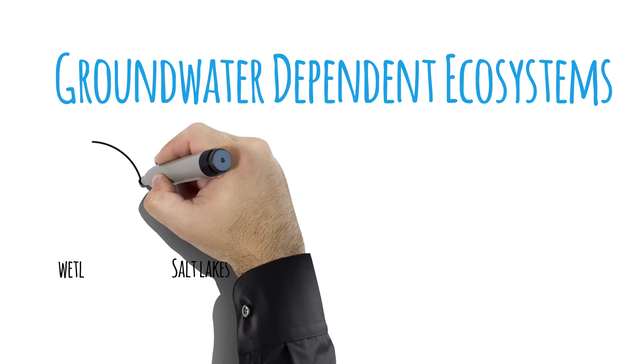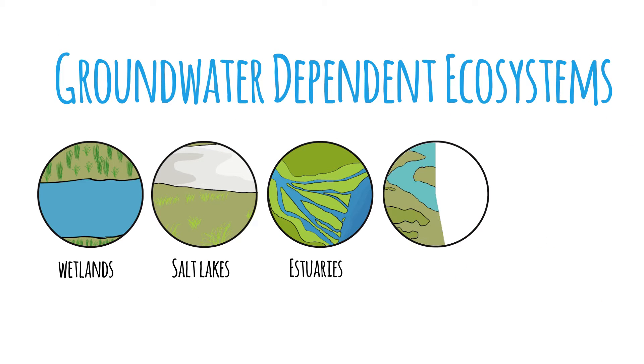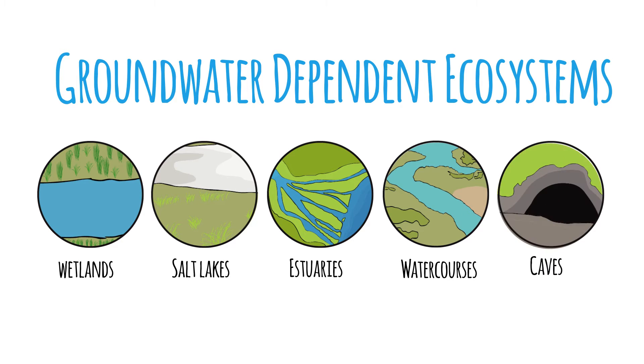GDEs include such things as wetlands, salt lakes, springs and estuaries. There are also other GDEs on Eyre Peninsula including ecosystems below the ground and in caves as well as some that are found in marine environments close to the shore.